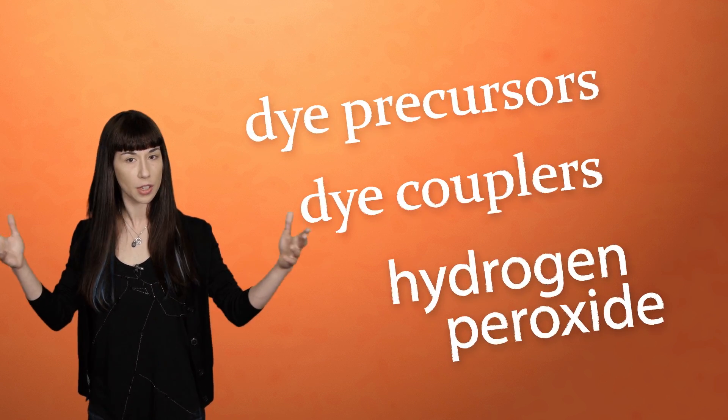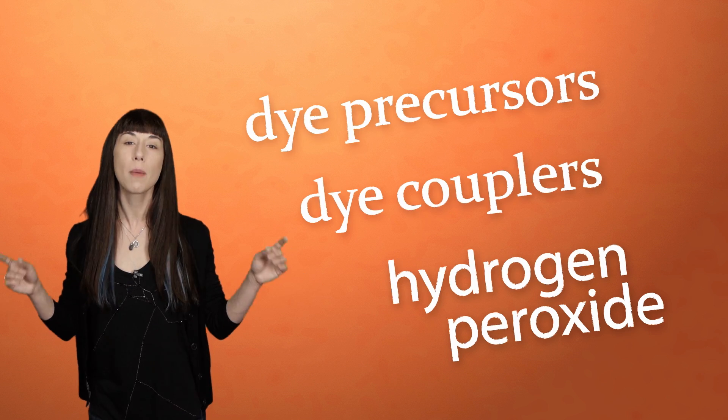You, or your salon professional, mix the two together right before applying them to your hair. The alkaline chemical — either ammonia or a more gentle substitute — goes to work opening up the cuticle. For dye to be most effective, it needs to access hair's cortex. Alkaline stuff temporarily softens and relaxes the cuticle's scales.